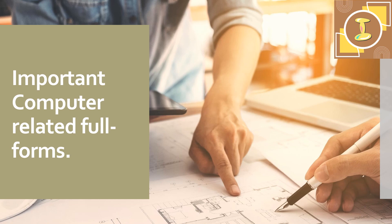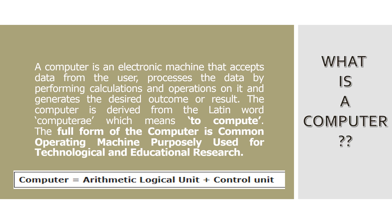Now without any further ado, let's get started. First things first — a computer is an electronic machine that accepts data from the user, processes the data by performing calculations and operations on it, and generates the desired outcome or result. The word computer is derived from the Latin word 'computere' which means to compute. The full form of COMPUTER is Common Operating Machine Purposely Used for Technological and Educational Research.